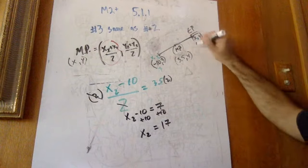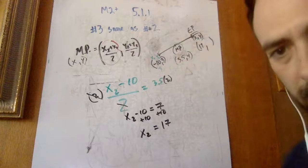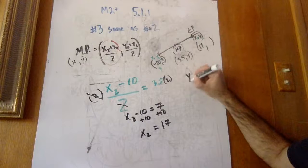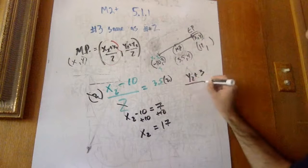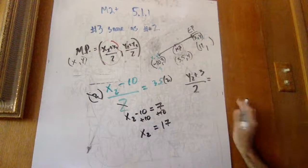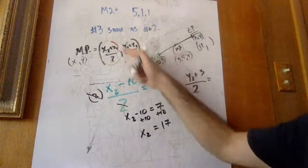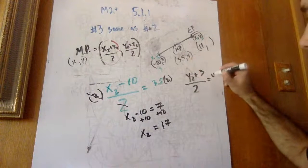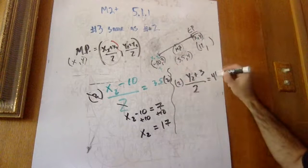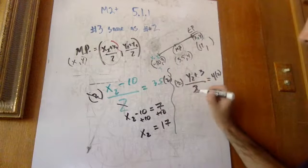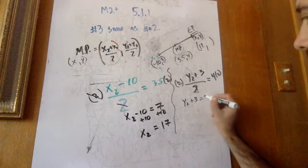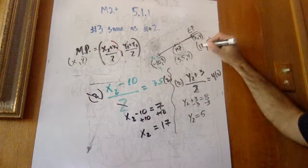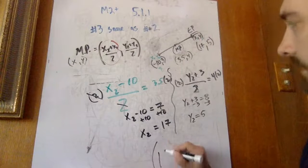Now we do the same process with y. We take y₂ plus y₁ (which is 3), divide by 2, and that equals the midpoint y-value of 4. Multiply both sides by 2: y₂ plus 3 = 8. Subtract 3: y₂ = 5. So the answer for problem 4 is (17, 5).